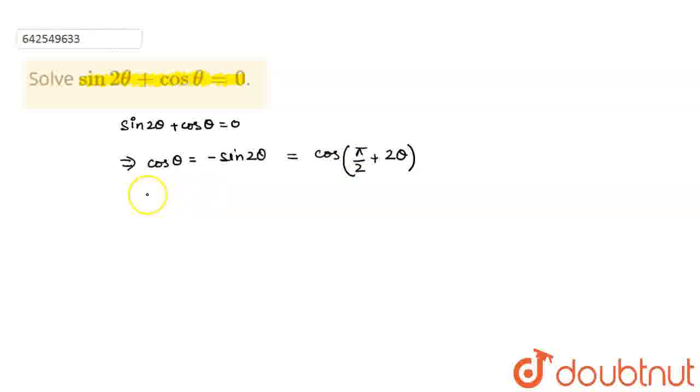So theta can be the general equation: theta is equal to 2n pi plus minus pi by 2 plus 2 theta, for all values of n belonging to integer Z.